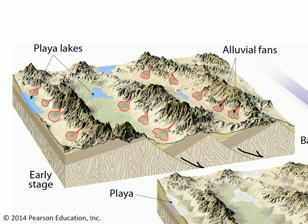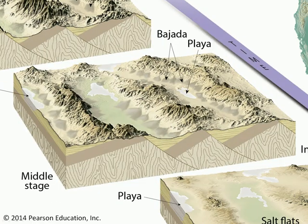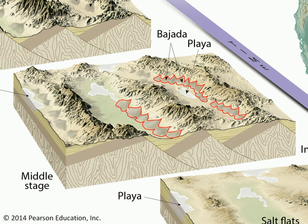Prominent are the alluvial fans. These are basically big piles of sediment that are produced where the canyons draining the mountains end up meeting the valley floor. If there are particularly low spots, water may accumulate, and that is present in the form of these playa lakes. If you let the landscape continue to evolve, the alluvial fans may coalesce to produce continuous aprons of sediment that basically drape the connection between the ranges and the basins — those are called bajadas. And the lakes may dry up to produce these salt flats known as playas.